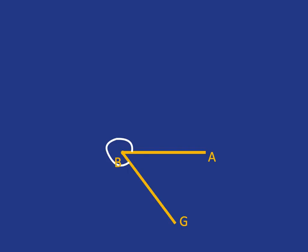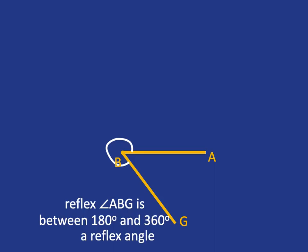Now if we look at this angle here, we call it reflex angle ABG, and I'll tell you why we add that little word reflex to it. This angle is greater than 180, but it's smaller than 360, which would be if you went all the way around the full circle. This kind of angle is a reflex angle.